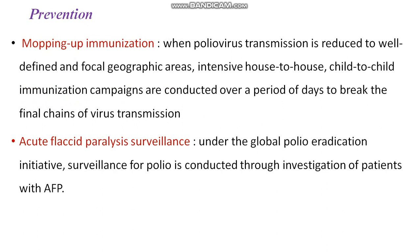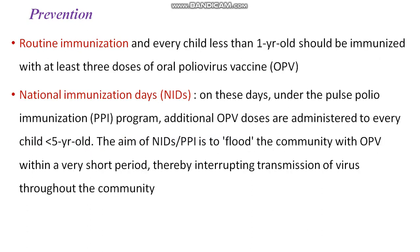The next strategy is Acute Flaccid Paralysis (AFP) surveillance. Under the Global Polio Eradication Initiative, surveillance for polio is conducted through investigation of patients with acute flaccid paralysis. In summary, preventive strategies include AFP surveillance, mopping-up immunization, National Immunization Days, and routine immunization.